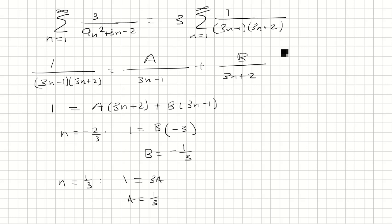Keep in mind, we still have a 3 here. So basically, it's 3 times, and then A is 1 third over 3n minus 1, and then minus 1 third over 3n plus 2. And then when we distribute the 3 to both of these terms, these cancel, since 3 times 1 third is 1. So we have 1 over 3n minus 1 minus 1 over 3n plus 2.